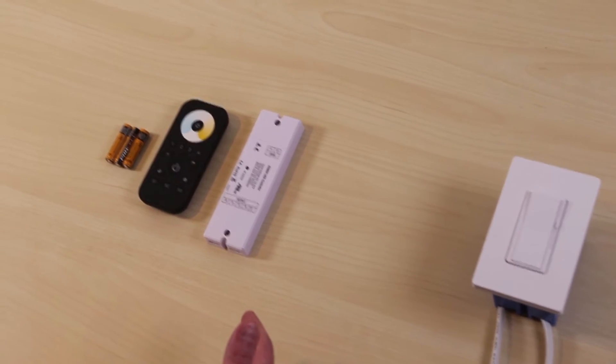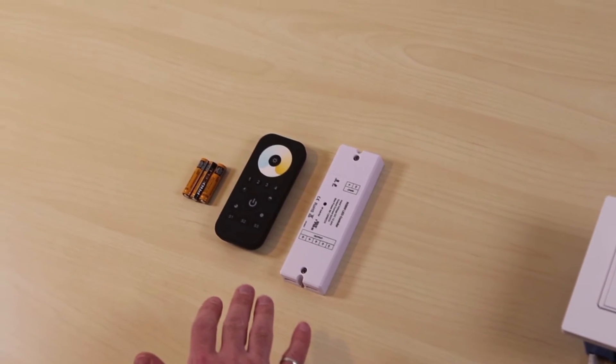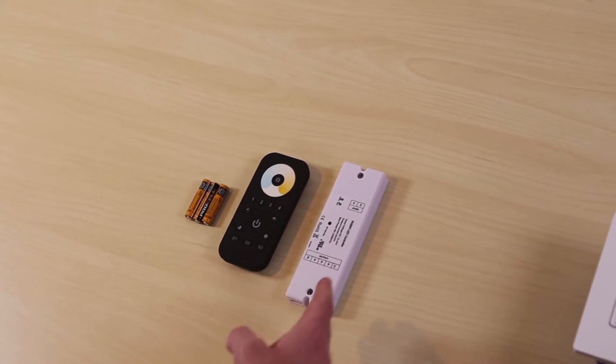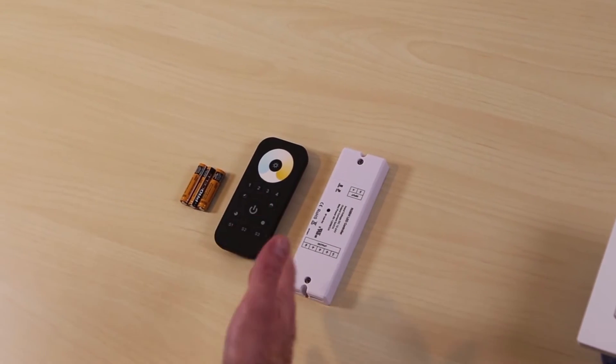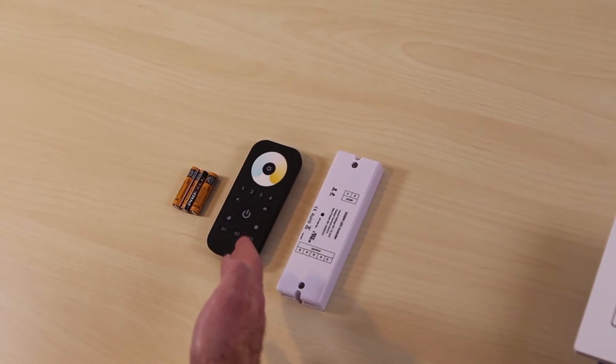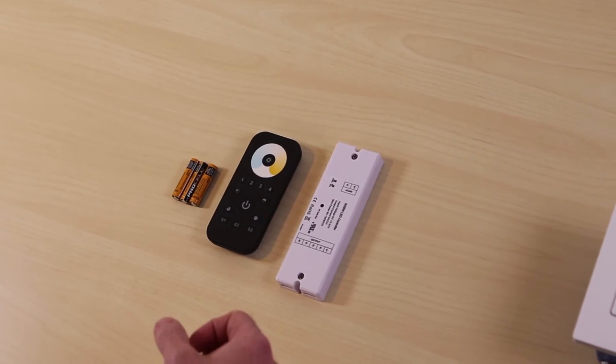There's other solutions on the market that allow you to select the Kelvin temperature of the light. But they require a receiver, a remote, batteries for the remote, and the big thing is it requires the user to learn how to use the remote to constantly switch their Kelvin temperature to what they desire.